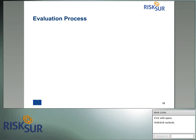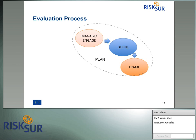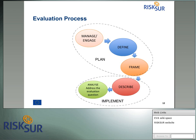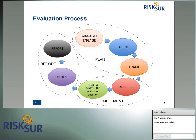The evaluation process can be divided into three main parts. The first is the planning phase, which includes engaging decision makers, defining the object under evaluation, framing the evaluation, and defining the evaluation plan. The second is the implementation phase, which involves description and analysis — assessment of the system and analysis of data. The third part is about reporting: synthesizing results and reporting outputs to decision makers to engage them in required changes.